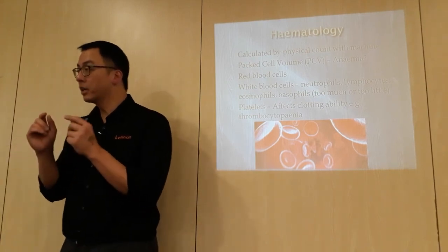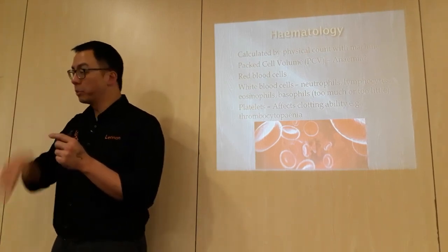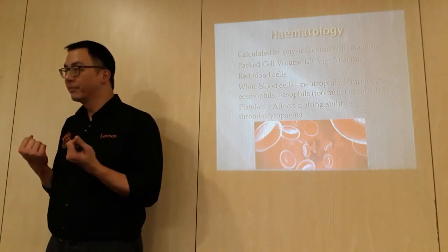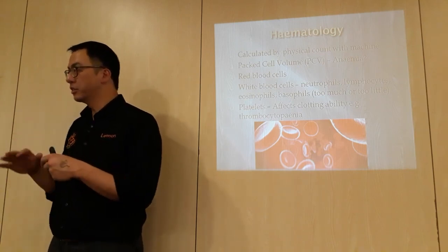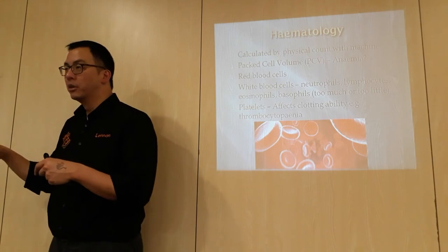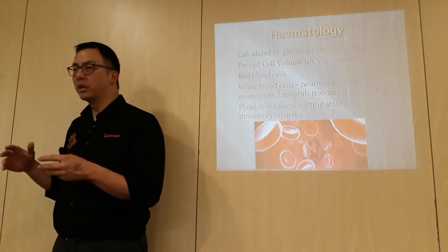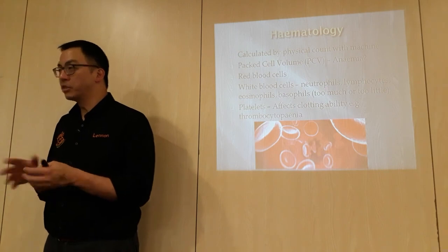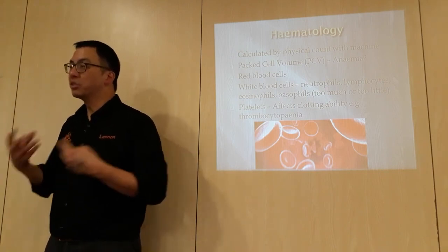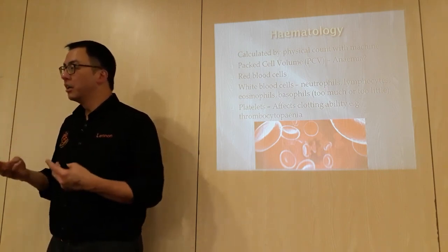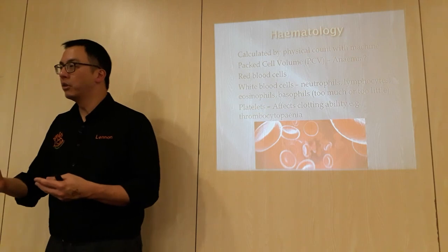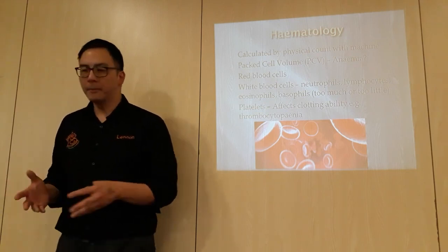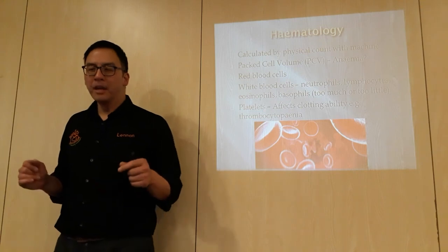In very acute infections, neutrophils can drop very low because they've all been used up. You may then see high lymphocytes, indicating an active infection. This means the animal is probably in trouble because neutrophils are being used up faster than the body can produce them.